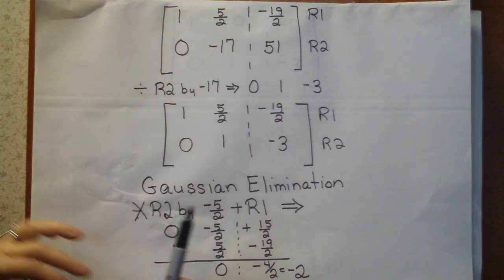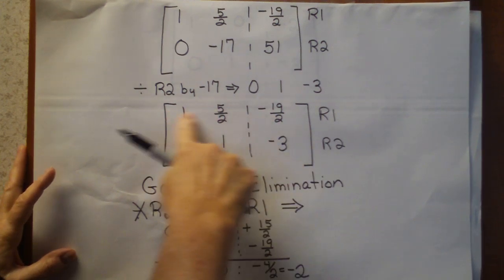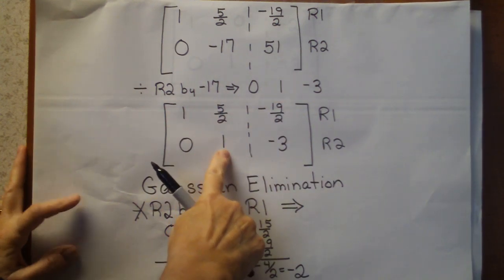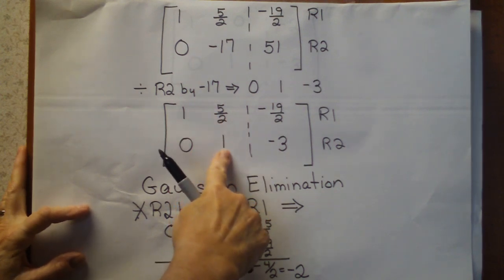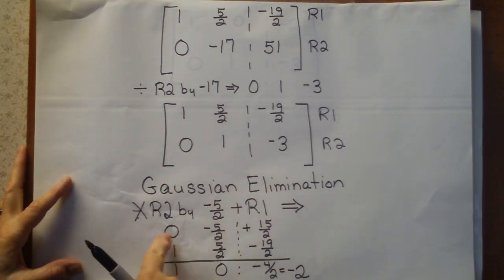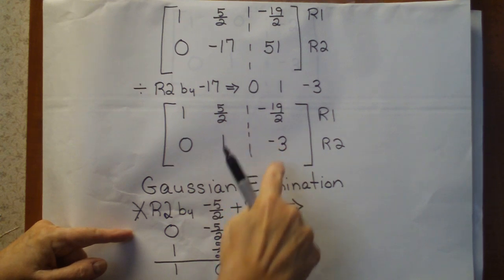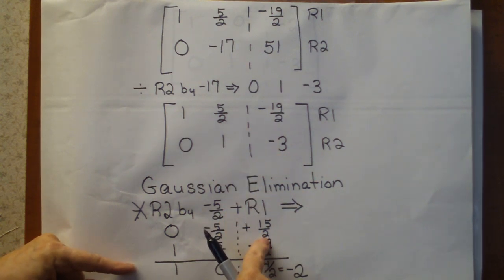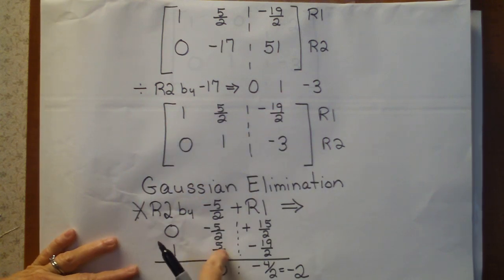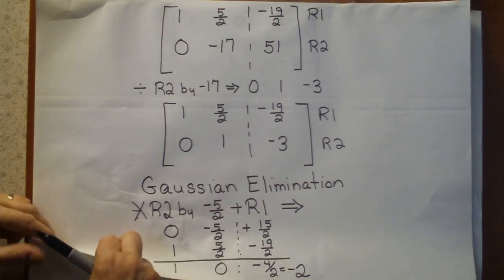Now, how do we get the 0 there? Well, in a way, we're going to do the same thing we did to get the 0 here. We're going to use this row to multiply by and then add it to this one. Well, what do I have to multiply that by and add to that to make 0? And the answer, of course, is minus 5 halves. So I multiply 0 by minus 5 halves and I get 0. I multiply 1 by minus 5 halves and I get minus 5 halves. And then minus 3 times minus 5 halves is 15 halves. Then I copy the top equation down, 1, 5 halves, and minus 19 halves. Add them together, I get 1, 0, and another nice number, minus 4 halves, which is minus 2. Now, I've got to copy that into one last matrix.